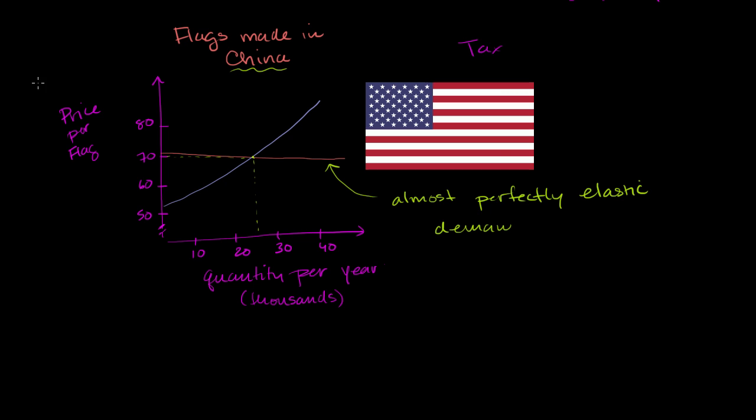So let's say that there is a tax placed of $10, $10 per flag. Actually, let's do it even, let's do even a smaller amount. Let's say there's a tax placed of $1 per flag. I'll make it a little bit larger. Let's say it's $5 per flag.